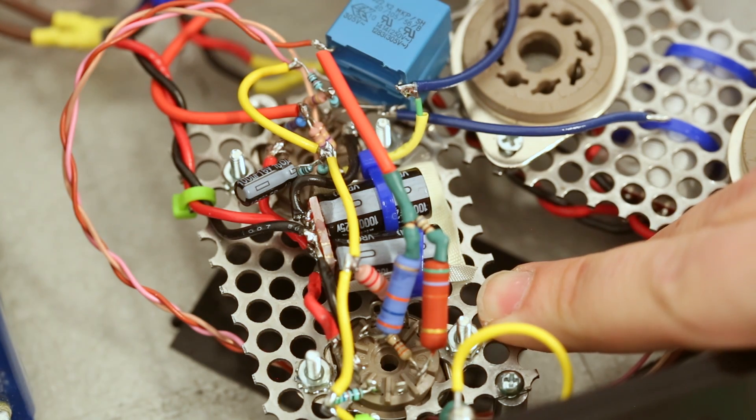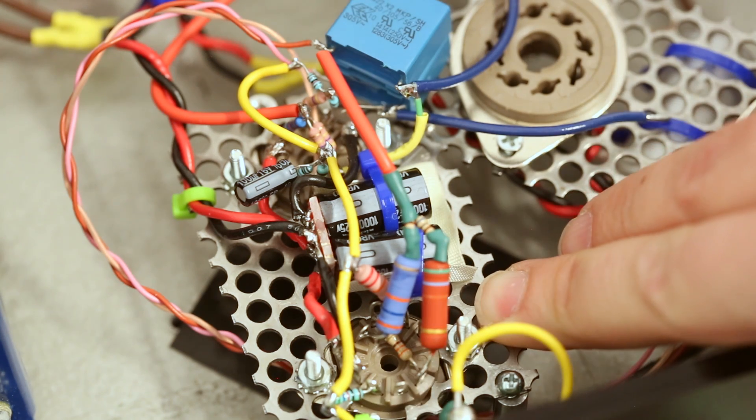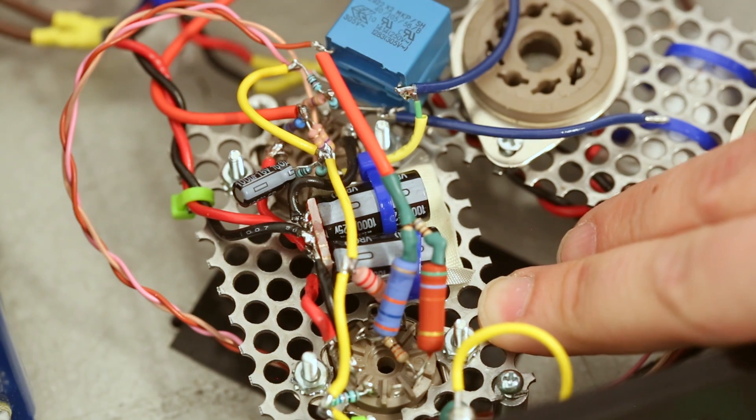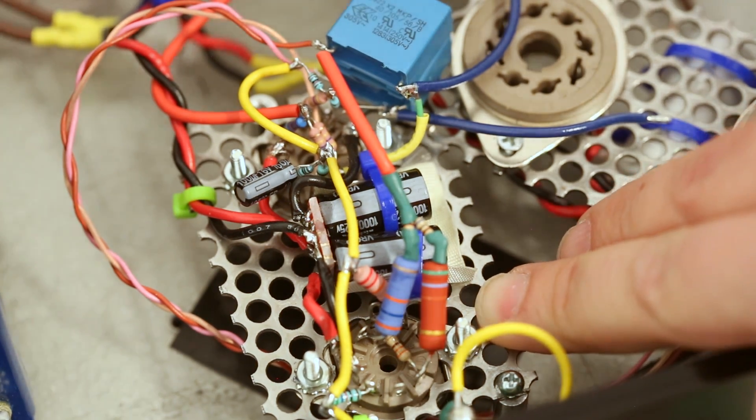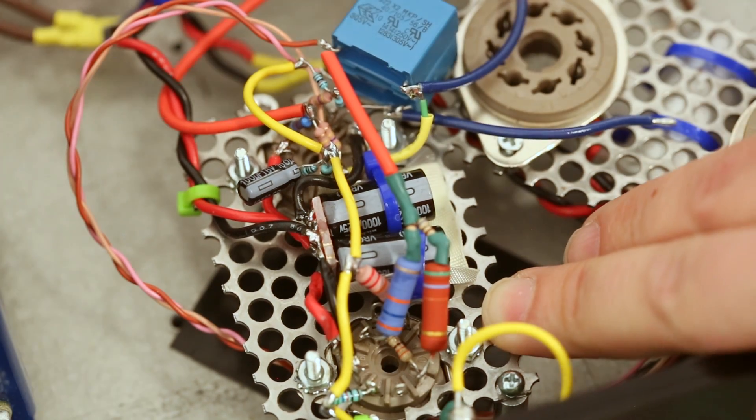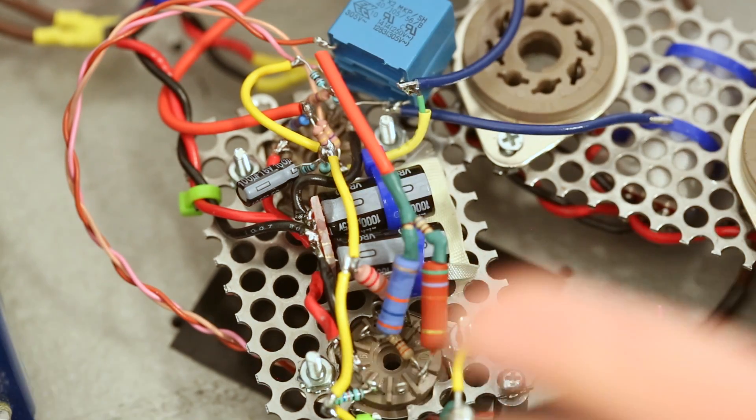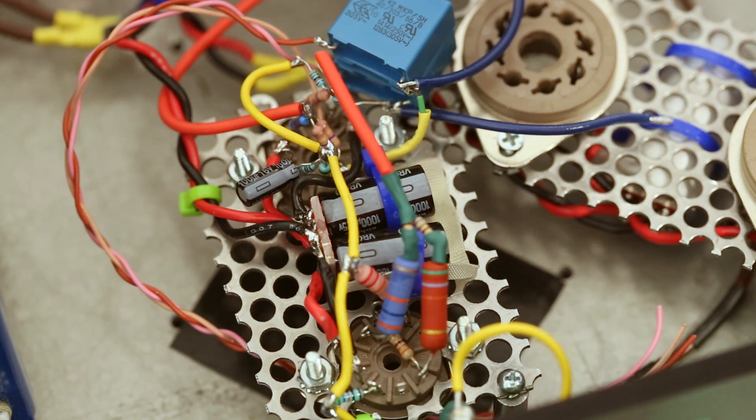I mean, a 12AX7 has got a gain of 100, I think, in its best configuration. Double check me on that, somebody. So it's not as critical to do that, but in this design, I just chose to make my supply lines the long ones and try to keep my signal lines the short one, thinking that it's going to be a quieter circuit as a result. We'll see if I actually nail it or not. And that's it.